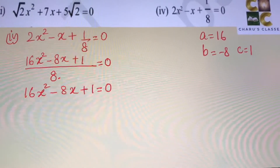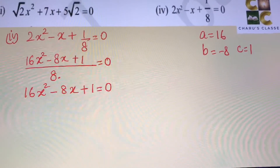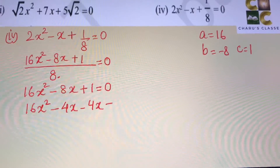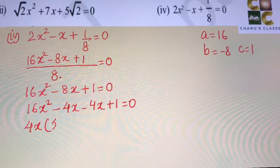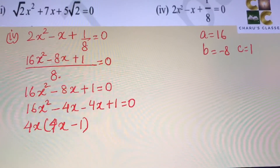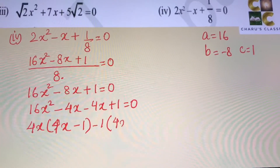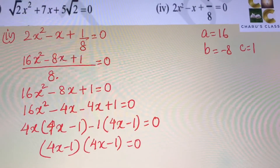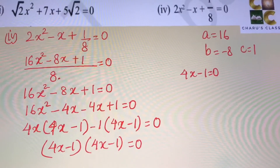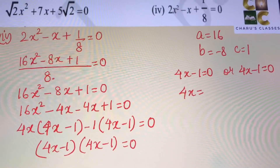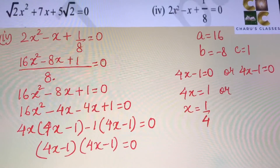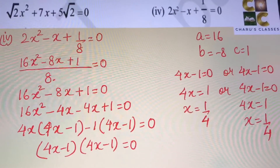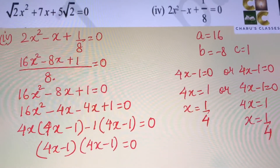The product of a and c is 16. We look for factors of 16 such that the middle term gives minus 8x, so we take minus 4 and minus 4. The equation becomes 16x squared minus 4x minus 4x plus 1 equals 0. Taking 4x common gives (4x minus 1), and taking minus 1 common from the next two terms also gives (4x minus 1). So we have (4x minus 1)(4x minus 1) equals 0. Therefore 4x minus 1 equals 0, giving x equals 1 by 4. Both roots are equal: x equals 1 by 4 and 1 by 4.